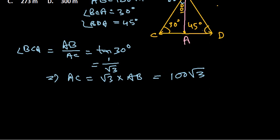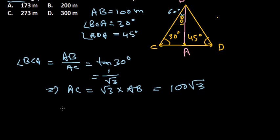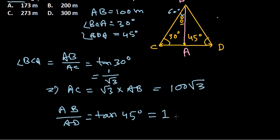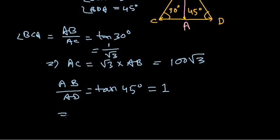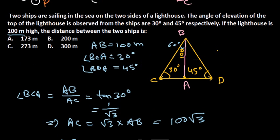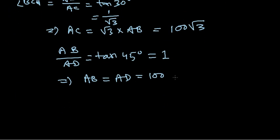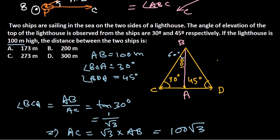Similarly, for the 45-degree angle on the other side: AB/AD = tan 45°. Tan 45° equals 1, so AB = AD. Since the height of the lighthouse AB is 100 meters, AD is also equal to 100 meters.